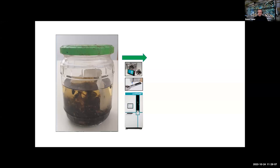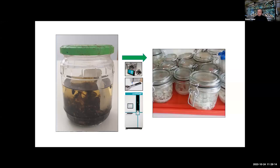Ultimately, we start with chaos, do barcoding and imaging, and create out of this chaos something more familiar — jars in an alcohol collection. The whole thing can be sorted using the principle of priority, because every single specimen has a specimen identifier, and each cluster consisting of multiple vials can be sorted by the lowest identifier found in that cluster.